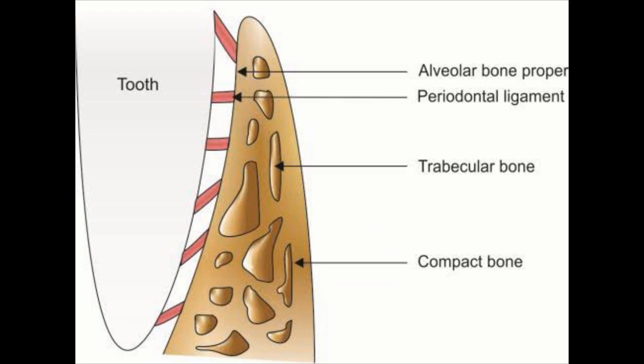Looking at the compact bone under a microscope, it is not a uniform structure. It has many surface layers of bone that are circumferentially layered, known as bone lamellae. The compact bone is very thick in the mandible, especially in the molar and premolar region, and comparatively thin in the maxilla. Clinically, when excessive force is applied during a dental extraction — especially in the maxillary canine area — we may fracture the compact bone, so a steady hand is important.